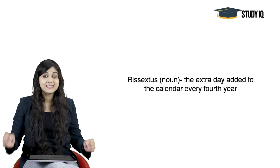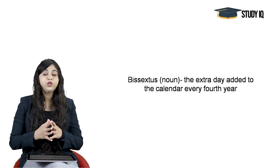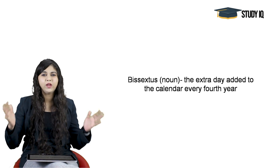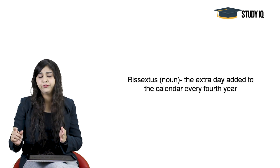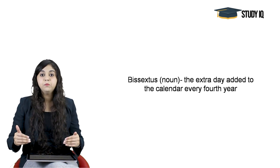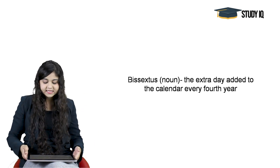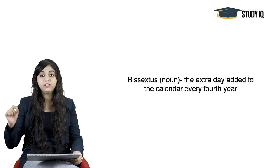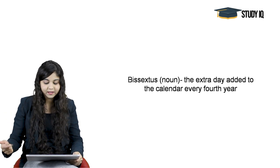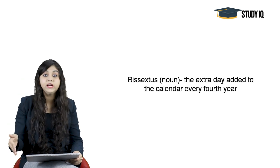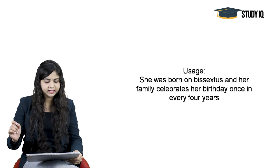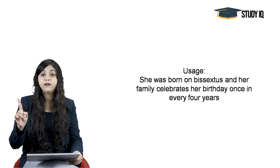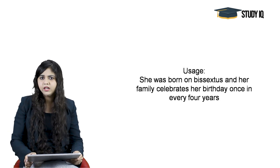Moving on to the next word of the day: Bisextus. Bisextus shabd ka arth hota hai — so whenever we talk about a normal year, ek normal year mein 365 days hote hain. Toh har jo aapke chhe ghante hain, woh ek baar 4 saal mein add ho jate hain on the 29th of February. So woh 29th February ke liye bisextus shabd ka prayog kiya jata hai. Bisextus is that extra day added to the Julian calendar every 4th year. Usage: She was born on bisextus and her family celebrates her birthday once every 4 years.